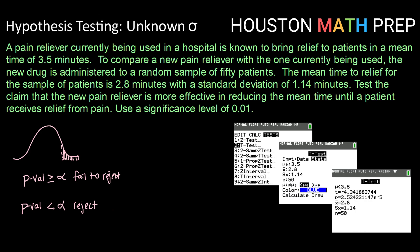So a pain reliever currently being used in a hospital is known to bring relief to patients in a mean time of 3.5 minutes. To compare a new pain reliever with the one currently being used, the new drug is administered to a random sample of 50 patients. The mean time to relief for the sample is 2.8 minutes with a standard deviation of 1.14 minutes.